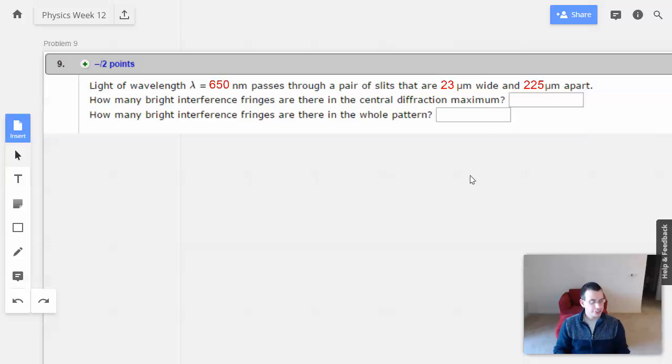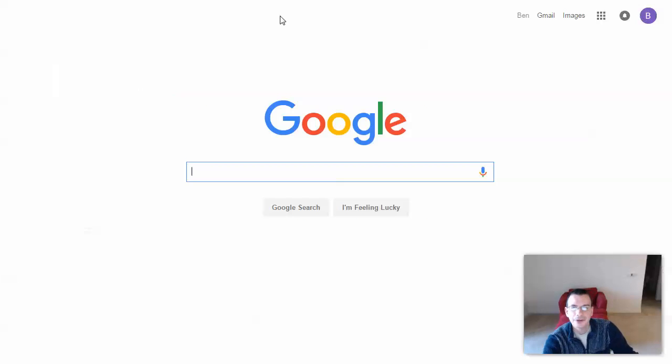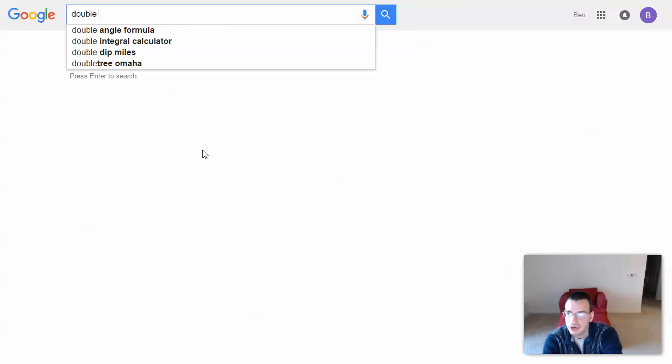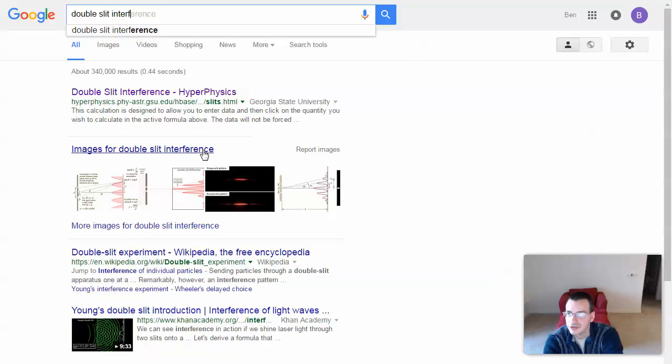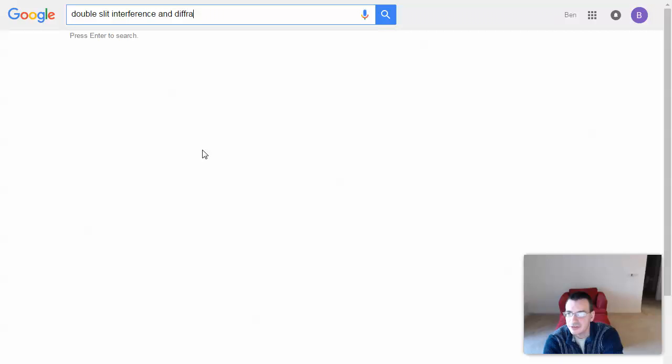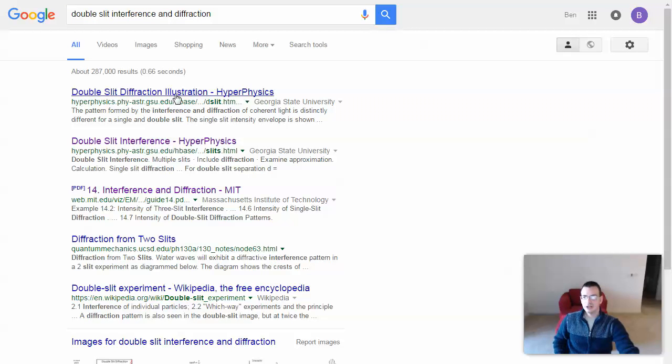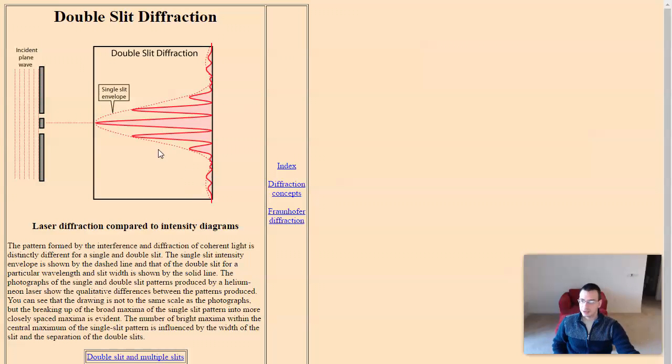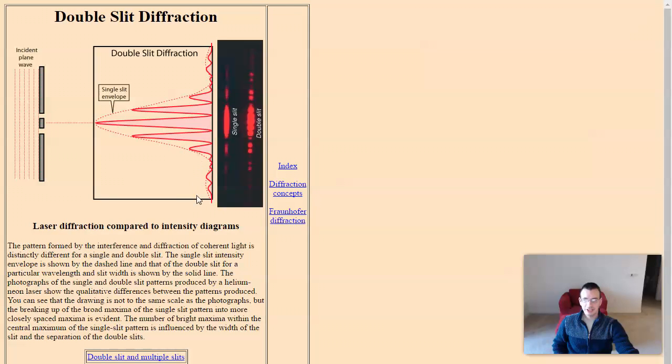Alright, so now we're combining the two concepts. We have both single slit diffraction and double slit interference. So we're going to do double slit interference and diffraction. Here's the concept: we have an envelope that's created by the single slit diffraction, but since it's double slit, we're going to have peaks within it. So we're going to have kind of a combination of both.